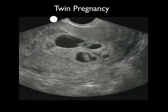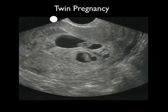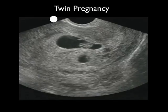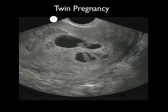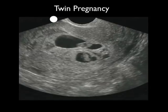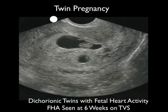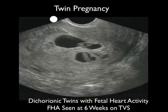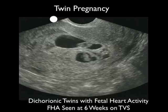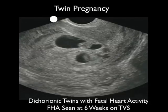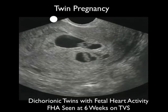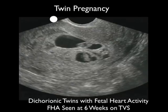Here's an interesting video clip showing a twin pregnancy. We see two gestational sacs, signifying dichorionic twins. Within each of the gestational sacs we can see little fetal poles with a flicker of heartbeats. Recall that fetal heart activity is seen at about 6 weeks on transvaginal sonography and about 7 weeks on transabdominal sonography.